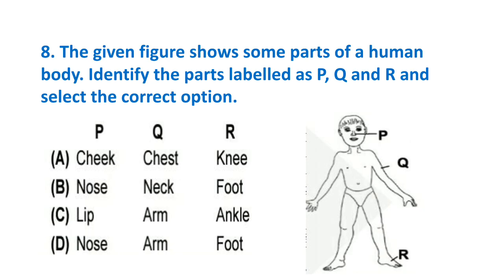Question 8: The given figure shows some parts of a human body. Identify the parts labeled as P, Q, and R and select the correct option. Look at the options and select your answer carefully.